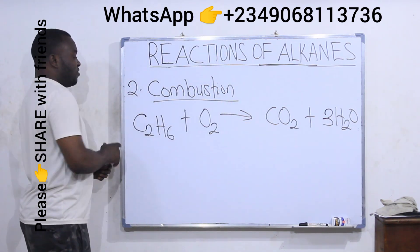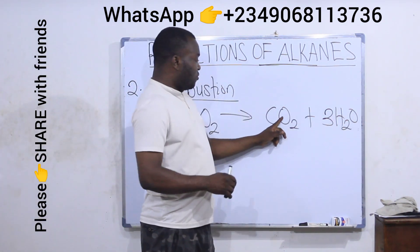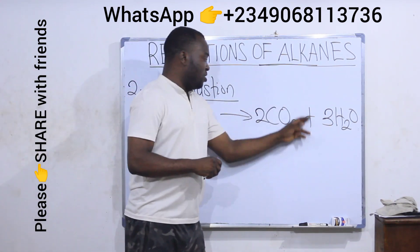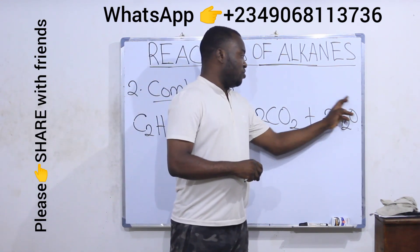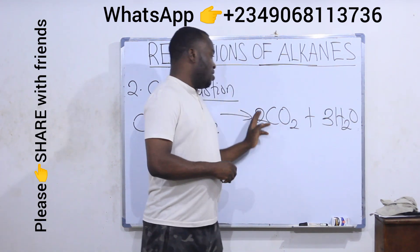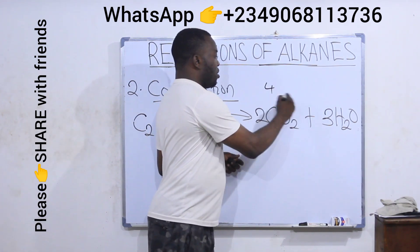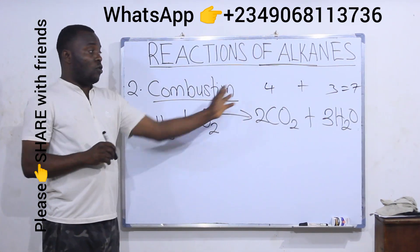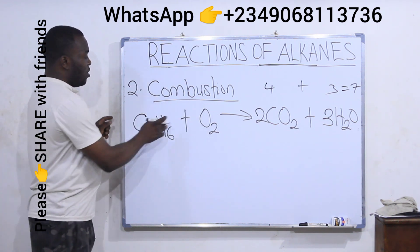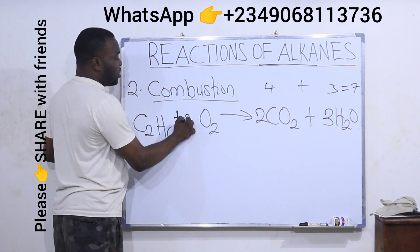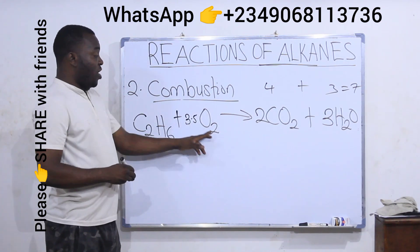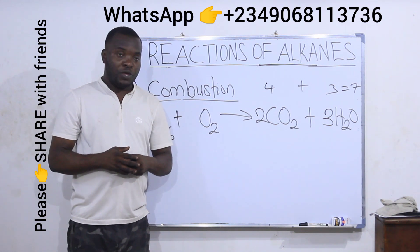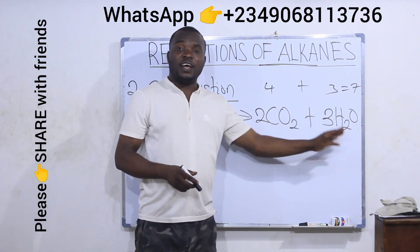Now let's balance oxygen. On the left I have two atoms of oxygen. On the right, oxygen from CO2 is four, and oxygen from water is three, so total oxygen on the right is seven. We have seven oxygen atoms on the right but only two on the left. We would need 3.5 here, since 3.5 times two gives seven. But in chemical equations we don't use decimal numbers. Since seven is an odd number that cannot be divided evenly by two, we write it as a fraction: seven over two.